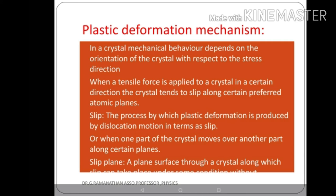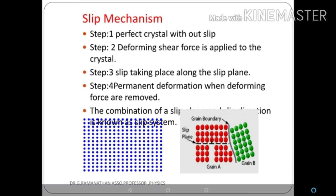There are four stages in slip mechanism: first, a perfect crystal without slip; second, a deforming or shearing force is applied and slip takes place along the slip plane; third, permanent deformation after removing the deforming forces. The combination of slip plane and slip direction is known as the slip system. For FCC: slip plane is {1,1,1}, slip direction is ⟨1,1̄,0⟩, giving 4×3 = 12 slip systems. For HCP: slip plane is (0,0,0,1), slip direction is ⟨1,1,2̄,0⟩, giving 1×3 = 3 slip systems.